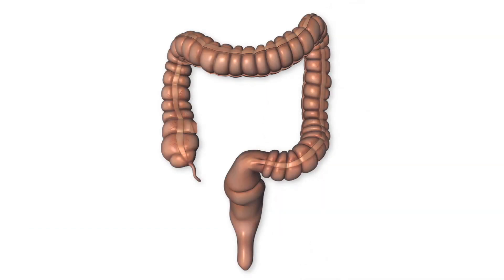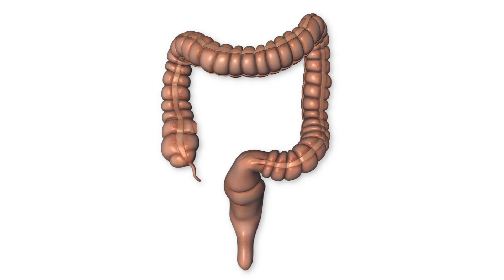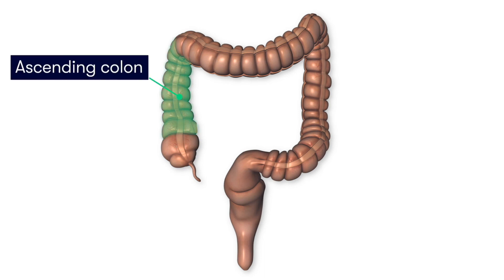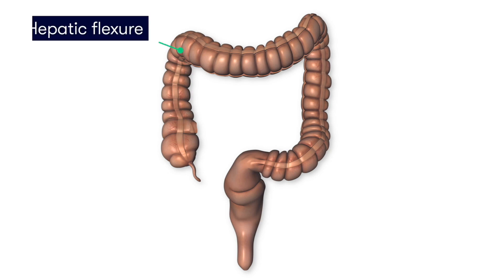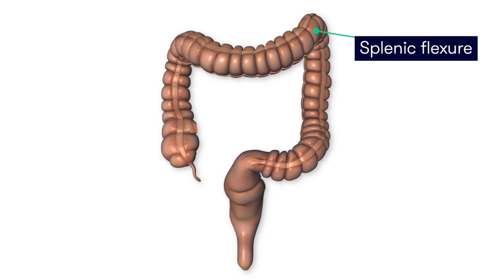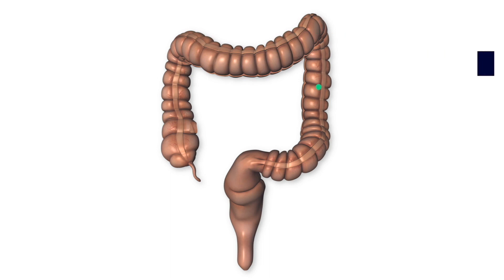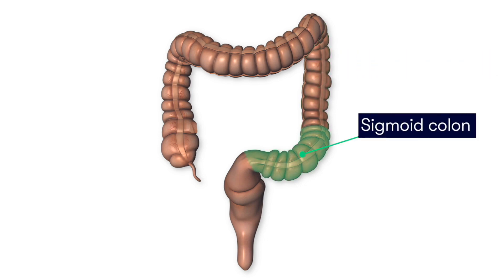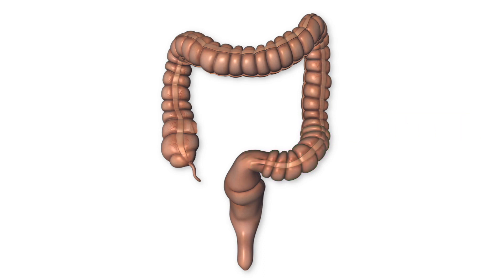The colon is divided into several areas. From proximal to distal, we have the cecum, which has the widest diameter of any part of the colon, then the ascending colon. Moving more distally and superiorly, we reach the hepatic flexure, which lies just inferior to the liver. At this point the transverse colon begins, continuing until we reach the splenic flexure, where the descending colon commences. This continues to form the sigmoid colon, with its characteristic S-shaped appearance, which descends inferiorly into the pelvis where we reach the rectum.